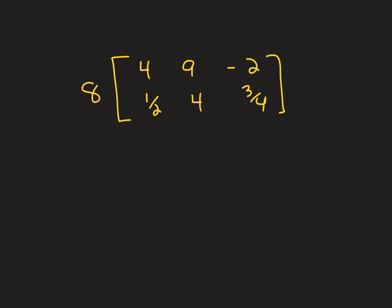I'll put a whole slide here for a scalar. If it was just a scalar, you just multiply through. 8 times 4, 8 times 9, 8 times negative 2, 8 times a half, 8 times 4, 8 times 3 fourths, and you got it.